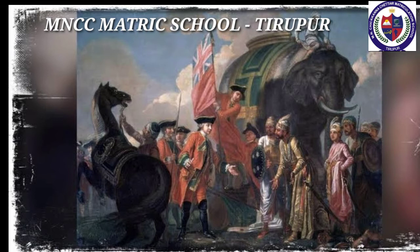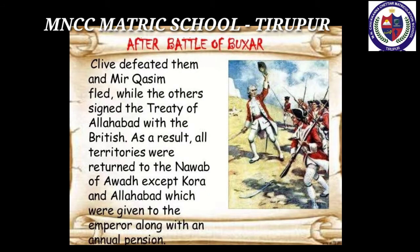The Battle of Buxar was a decisive victory for the British East India Company. Shuja ud Daullah, Shah Alam, and Mir Qasim were defeated by General Hector Munro. Mir Jafar was again placed on the throne. On Mir Jafar's death, his son Nizam ud Daullah was placed on the throne and signed the Allahabad Treaty on 20th February 1765. Robert Clive concluded two separate treaties with Shuja ud Daullah and Shah Alam. The Dual System of Government started in Bengal.